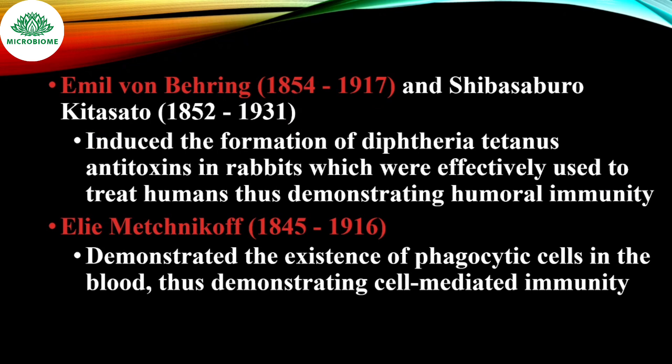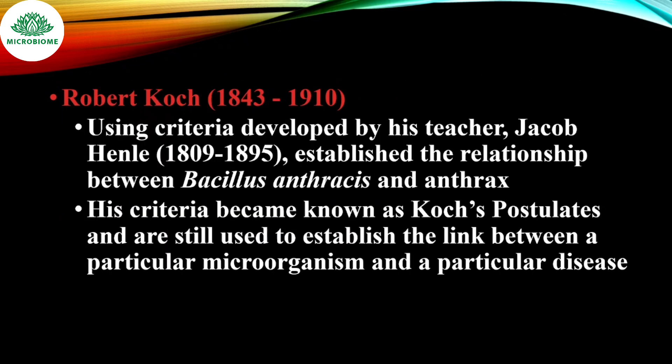Emil von Behring and Shibasaburo Kitasato induced the formation of diphtheria and tetanus antitoxins in rabbits, which were effectively used to treat humans, thus demonstrating humoral immunity. Elie Metchnikov demonstrated the existence of phagocytic cells in the blood, demonstrating cell-mediated immunity. Robert Koch, using criteria developed by his teacher Jacob Henle, established the relationship between Bacillus anthracis and anthrax. His criteria became known as Koch's postulates and are still used to establish the link between a particular microorganism and a particular disease.